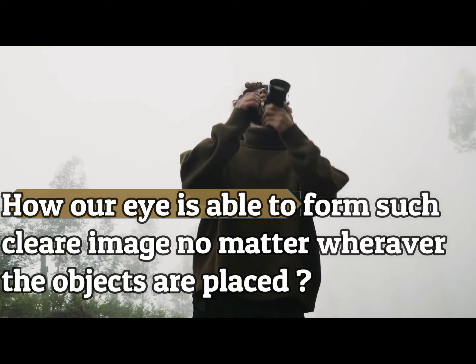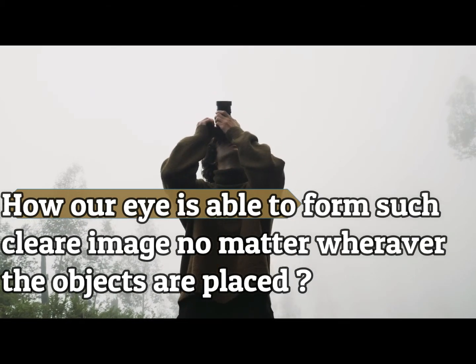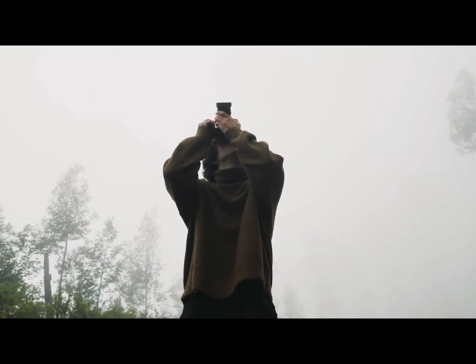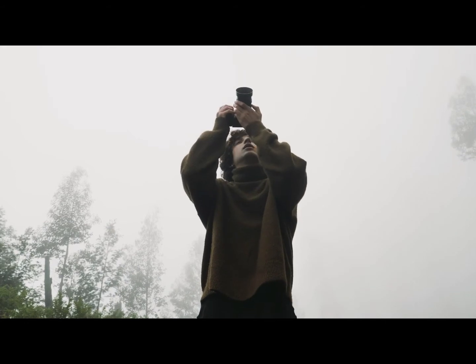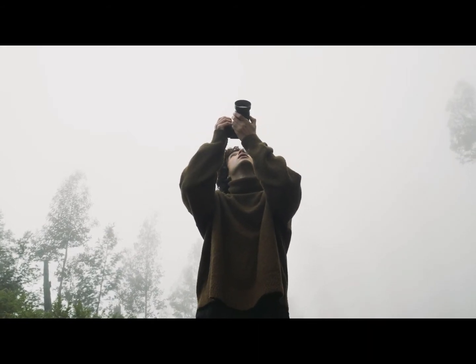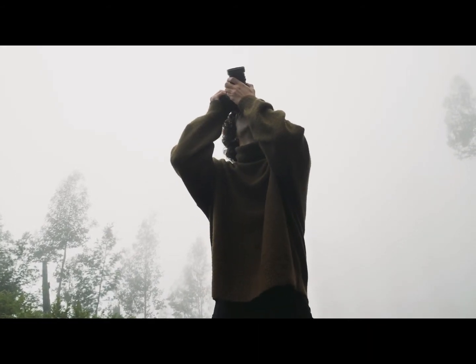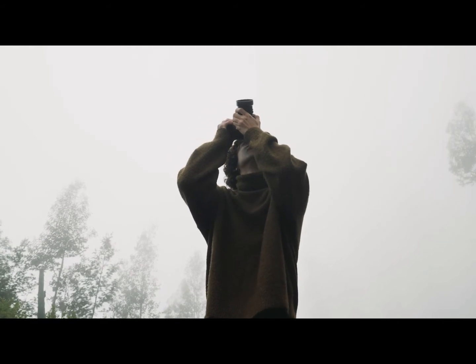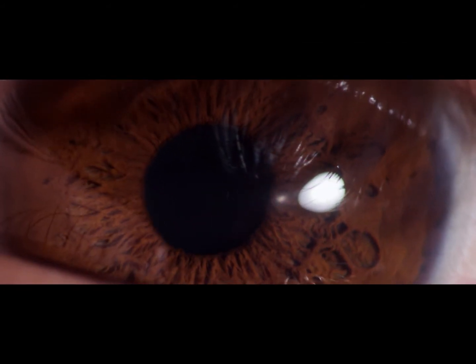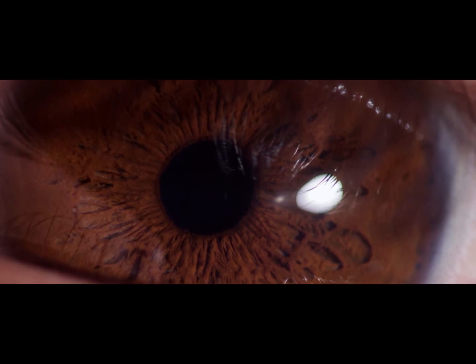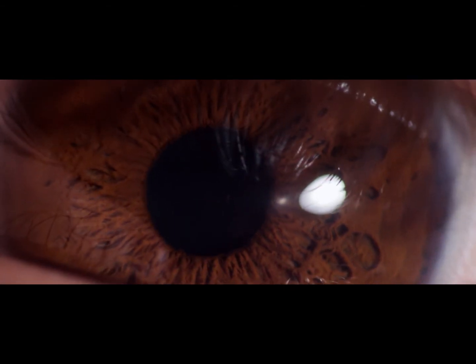But what happens in our eye is: are all objects positioned at a fixed point? No, each and every object is a little far or near to our eye. How is it able to form images so clearly? It is able to form images because the ciliary muscle adjusts the thickness of the eye lens so that it can form an image at a particular position on the retina.